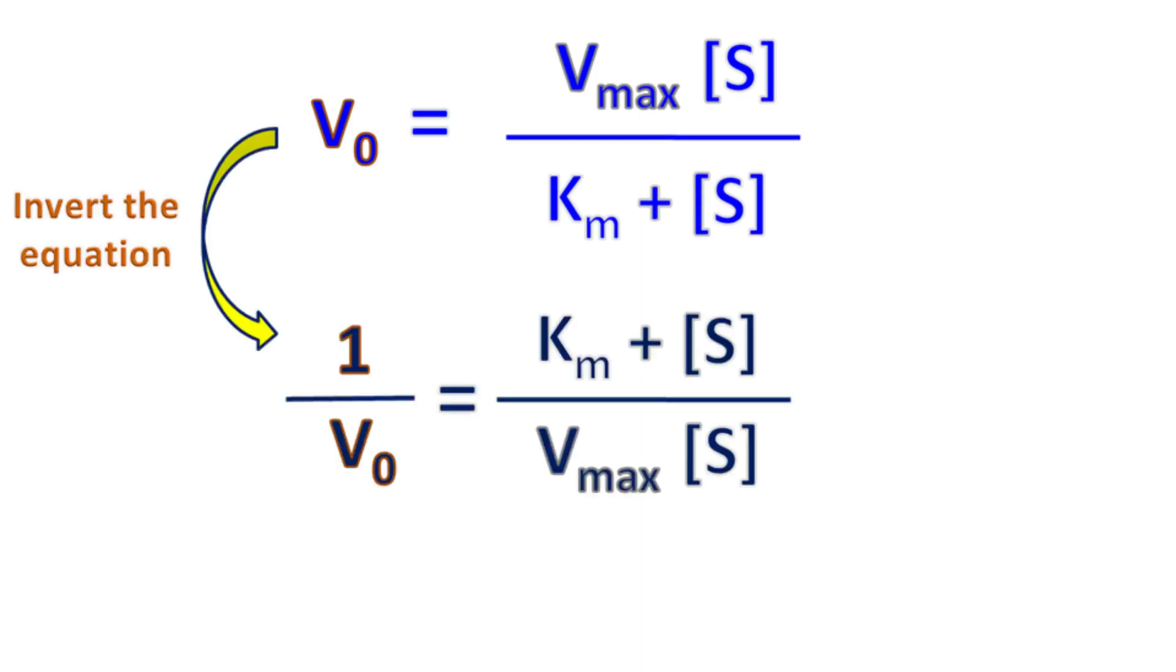Inverting this equation, we get 1 by V0 equals Km plus S upon Vmax into S.